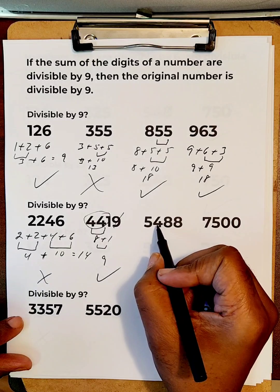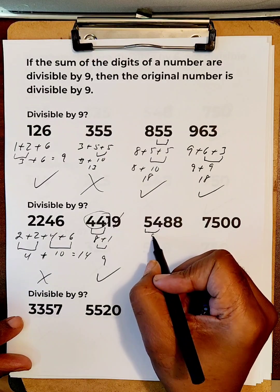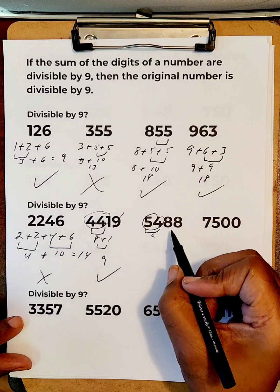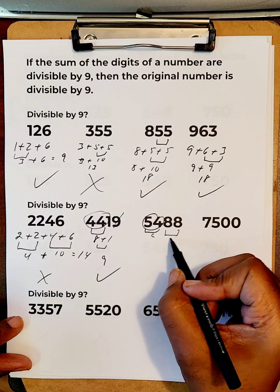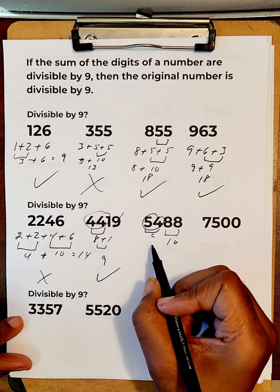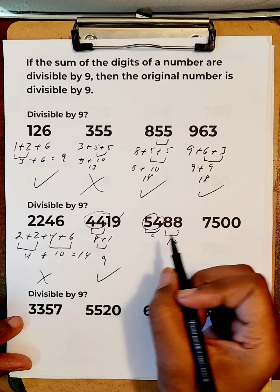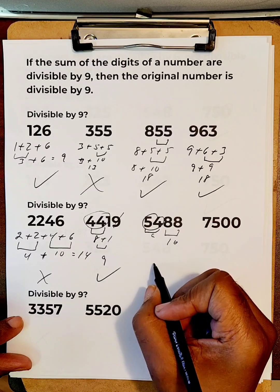5 plus 4 already adds up to 9. So, this is good. 8 plus 8 adds up to 16. That is not in the 9 timetables, so that wouldn't add well. So, this does not work.